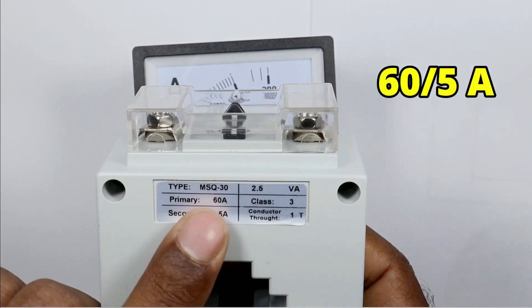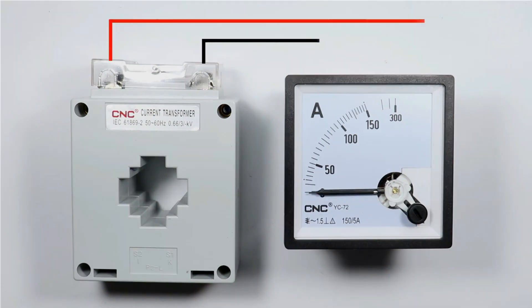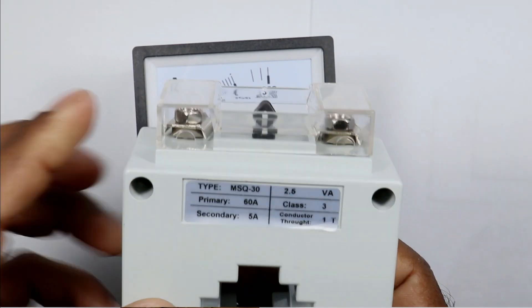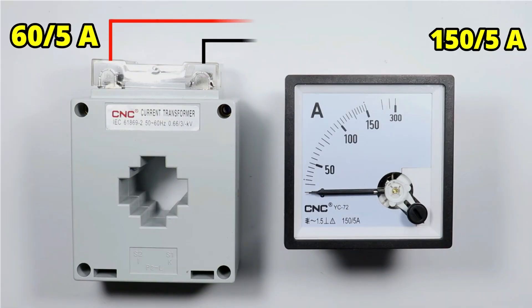As you all know, the ratio of the CT should be the same as the ratio of the ammeter for connecting these together. But a situation comes in front of you in which the ratio of CT is different and the ratio of ammeter is different. Then how will you connect this ammeter with CT?